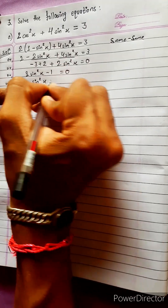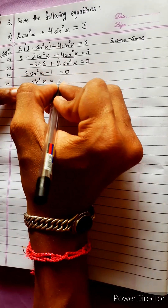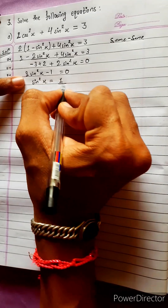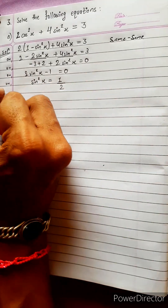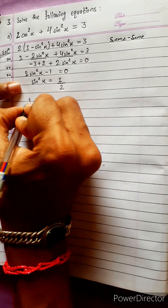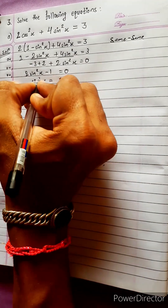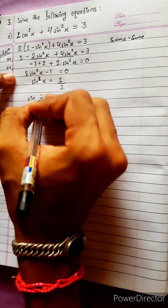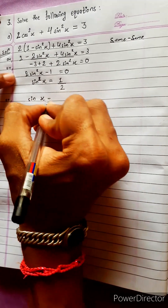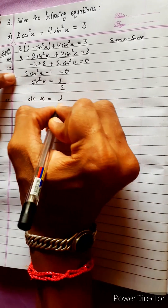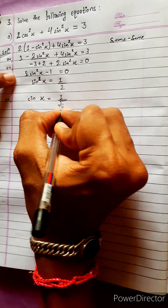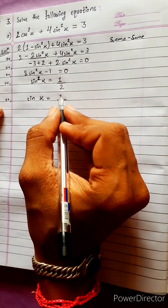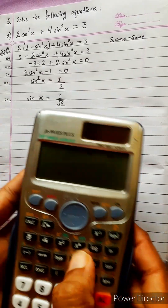sin²x equals 1/2, so sin x equals 1 over root 2. And 1 over root 2 equals sin 45 degrees.